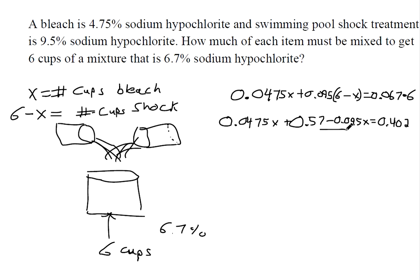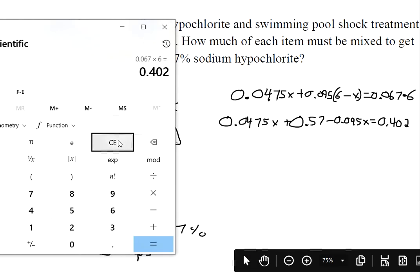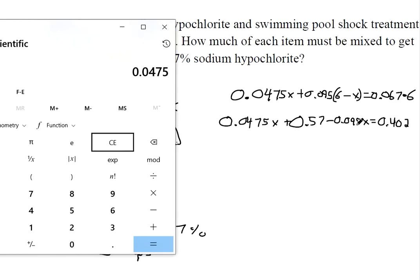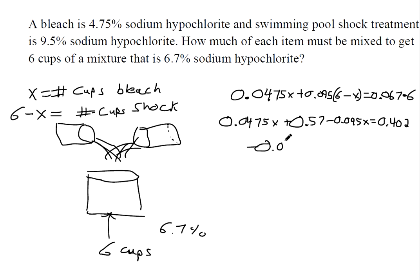We can combine like terms. These two things are already on the same side, so with my calculator, 0.0475 subtracted by 0.095 makes negative 0.0475. I combined like terms on the left side.